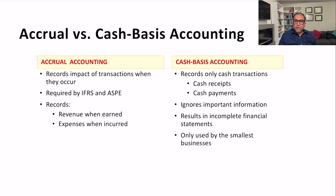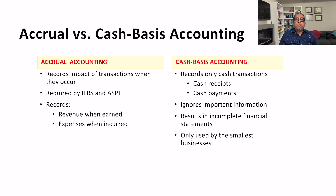Firms that operate globally or in different countries must follow International Financial Reporting Standards. If it is a public limited company, they follow IFRS. If it is a private company operating only within one country, they may follow Accounting Standards for Private Enterprises. However, in both cases, they must follow an accrual accounting system, not the cash basis.